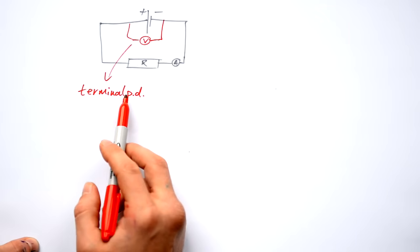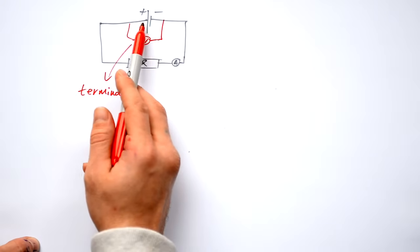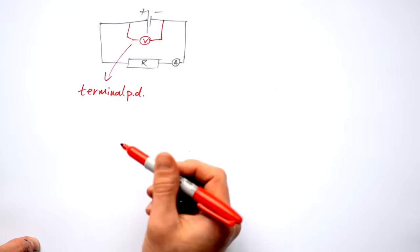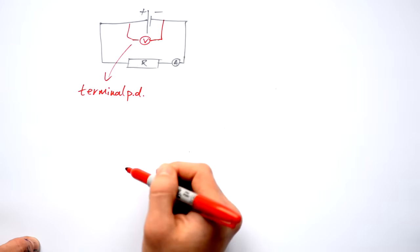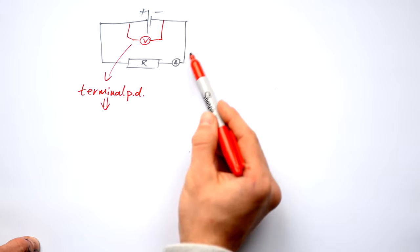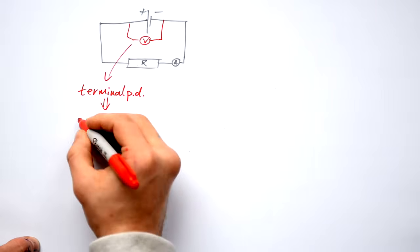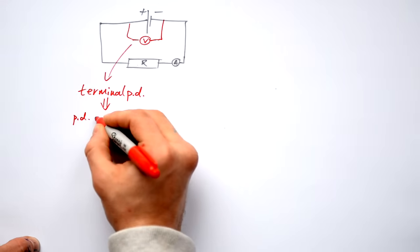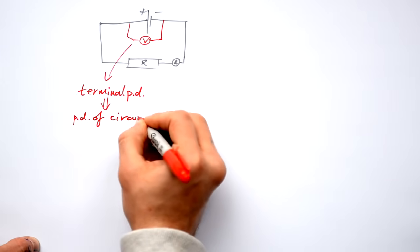People think that they're actually measuring the energy or the voltage lost inside of the battery there. No, they're not, because you can't actually measure that directly. All we're doing is measuring what the PD is between here and here. So in other words, it's the PD of the circuit. It's the voltage of the circuit.